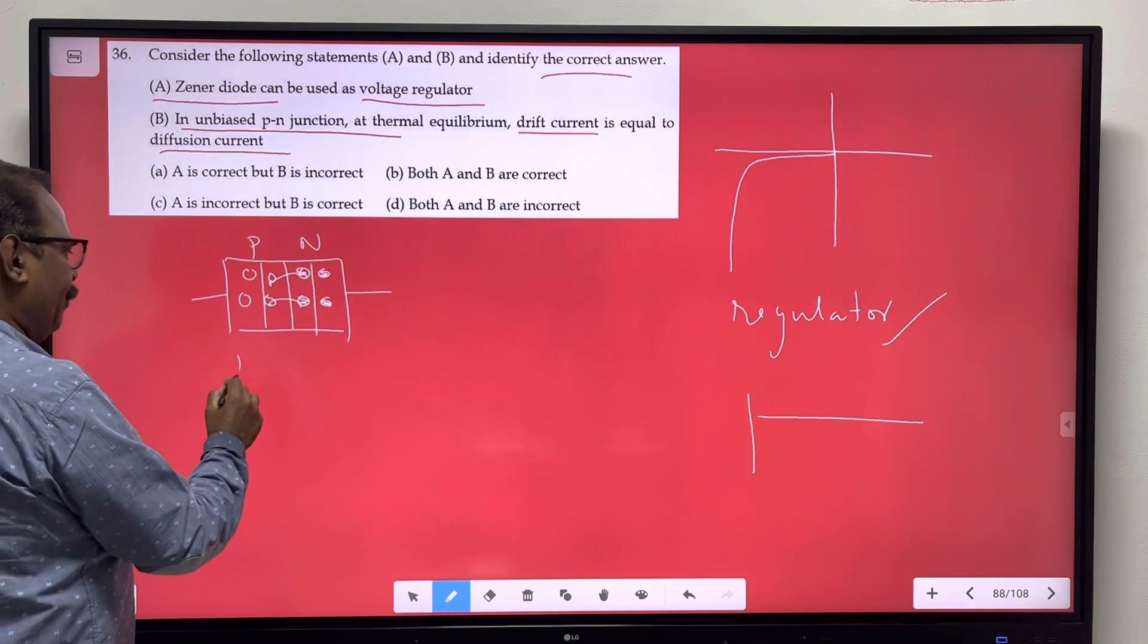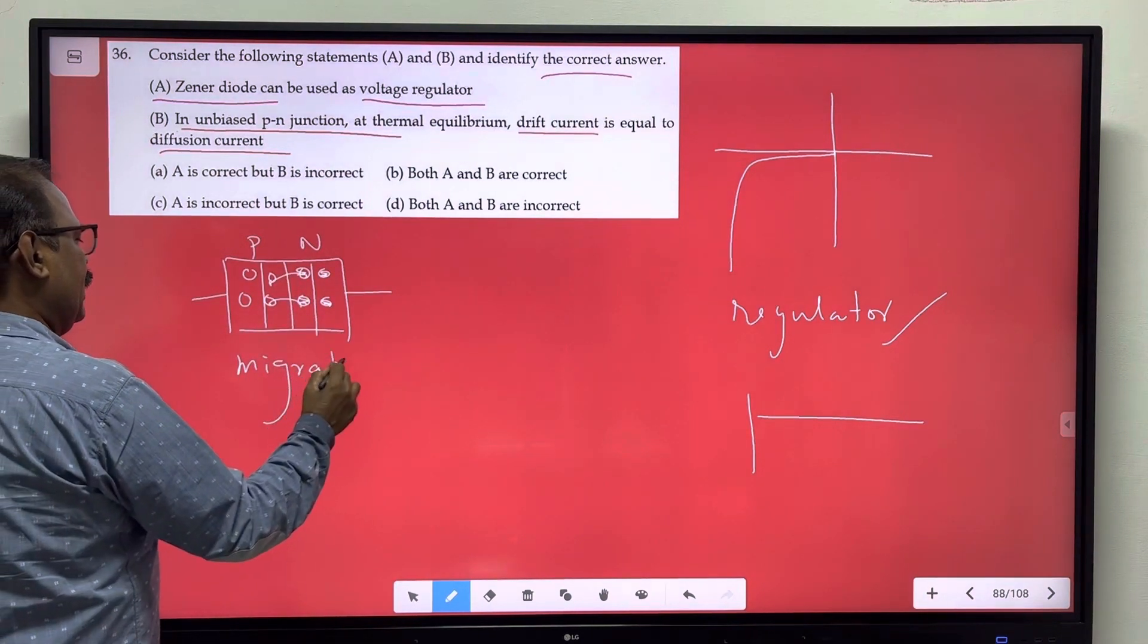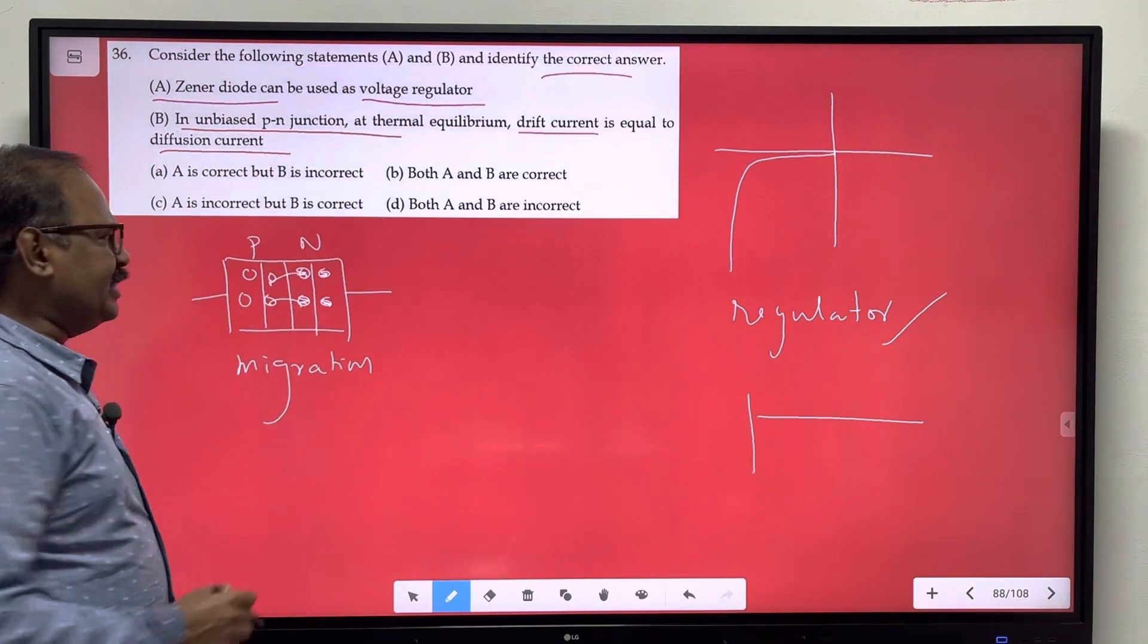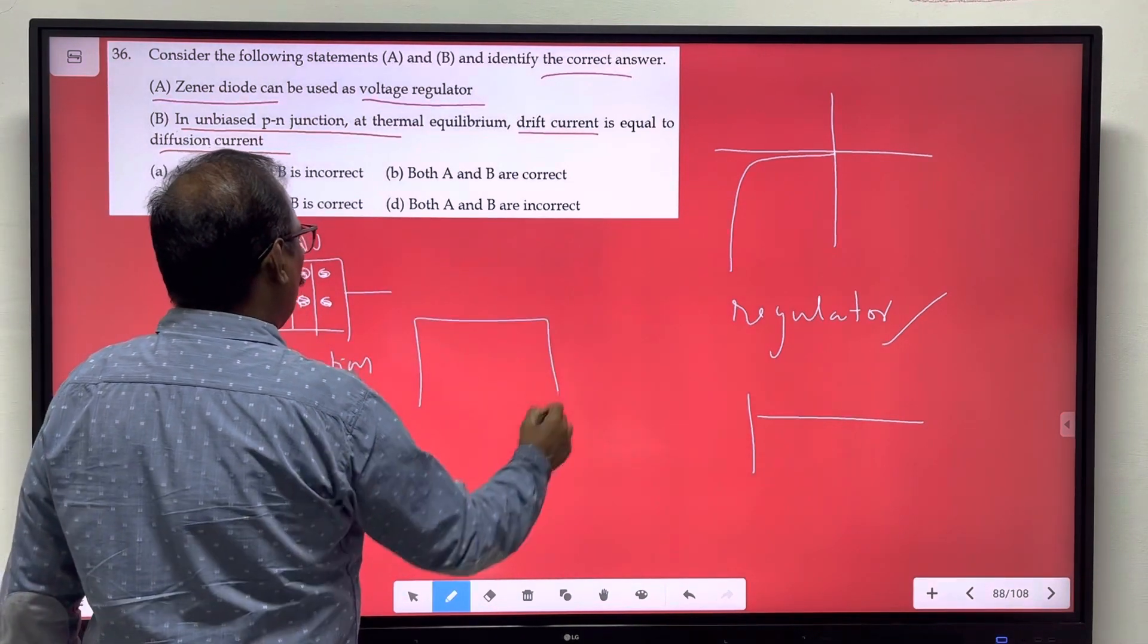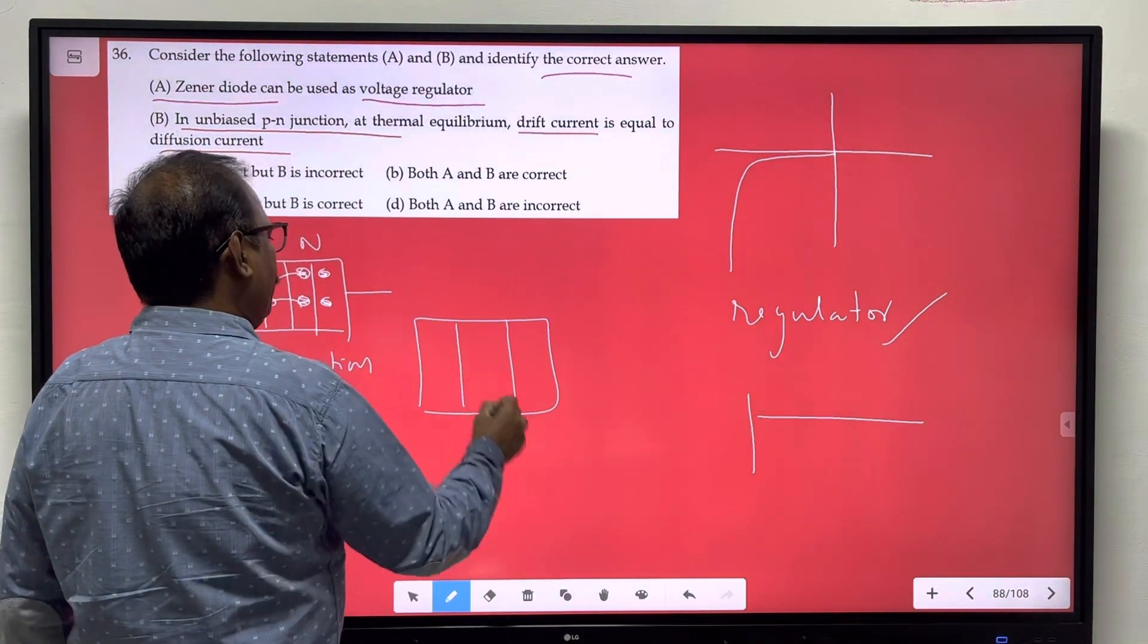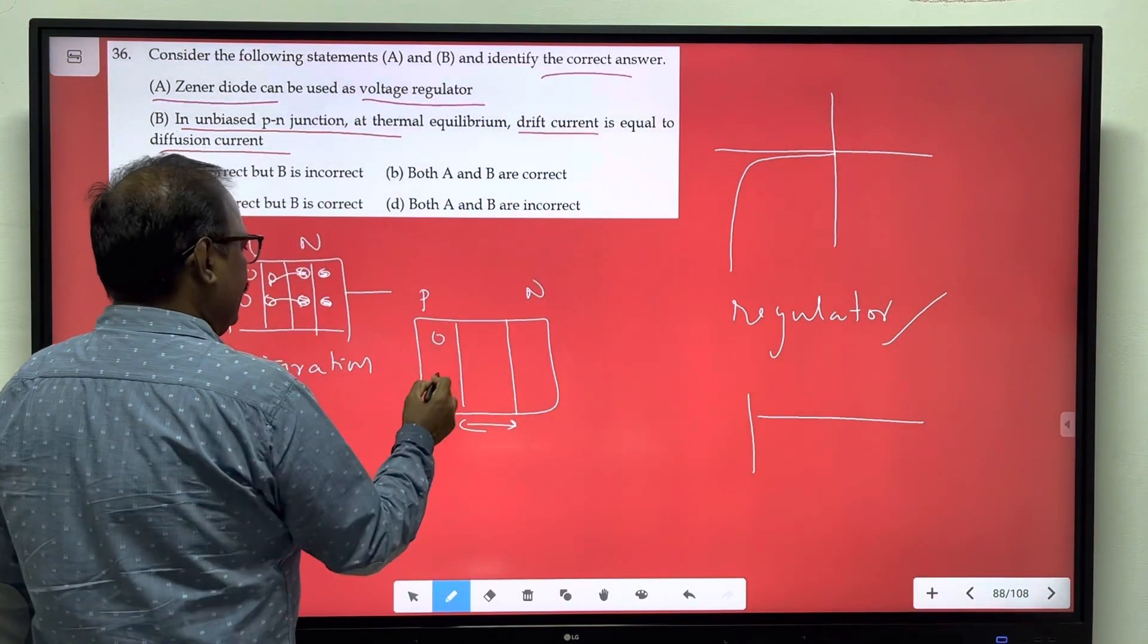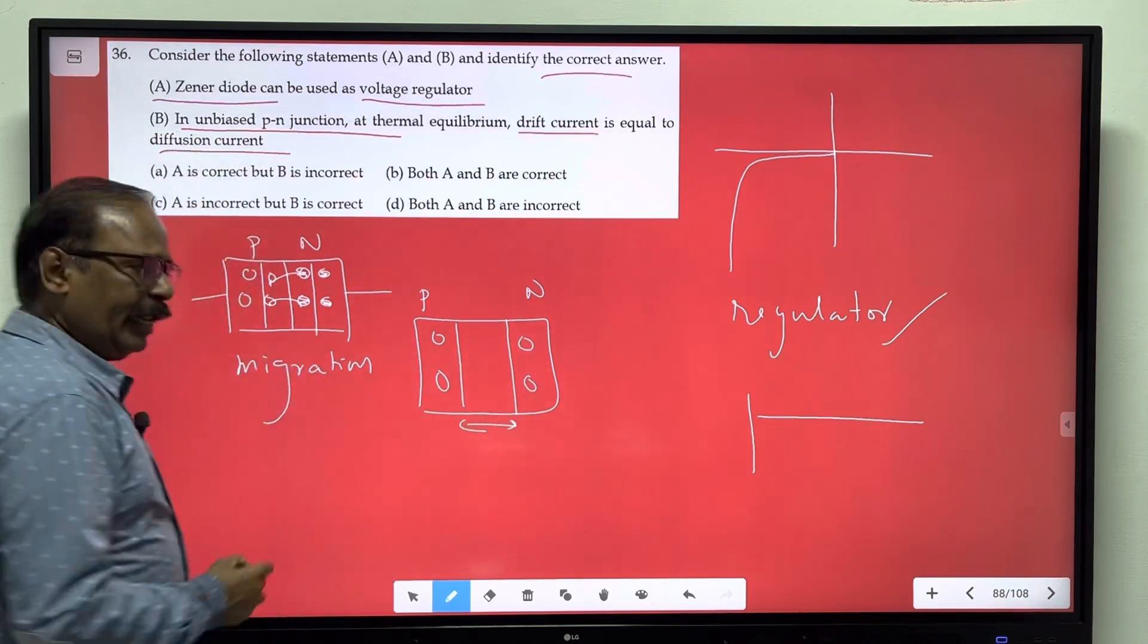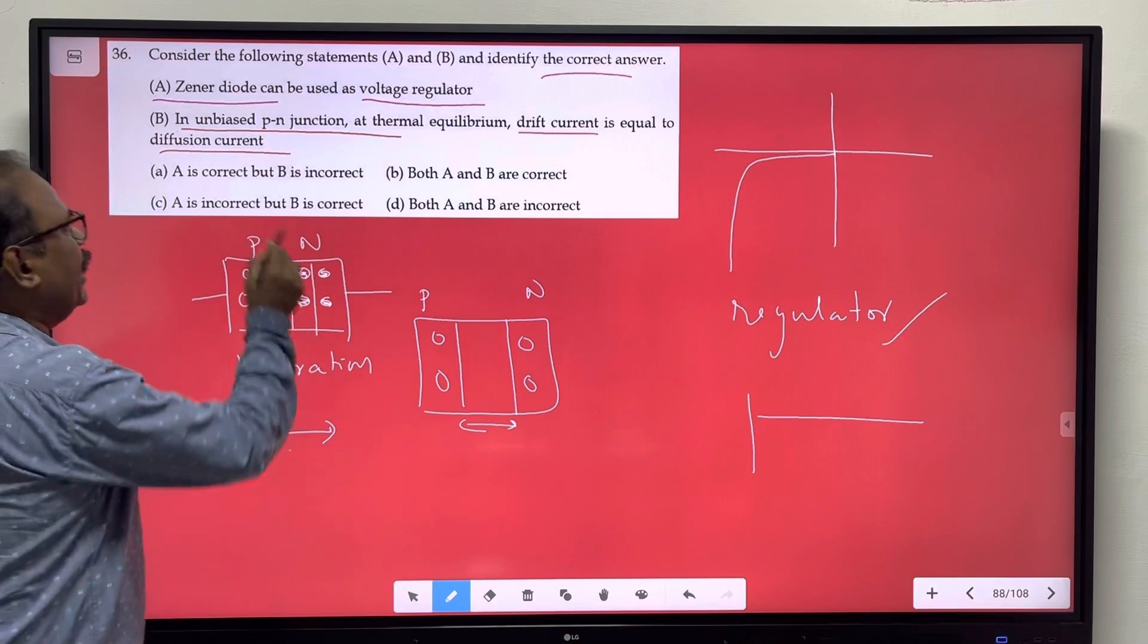the migration of electrons will happen, electron density. P-side holes density, electrons, that potential barrier creates. Migration electron current, diffusion.